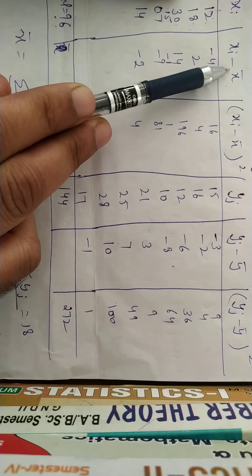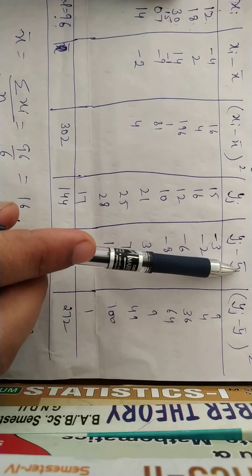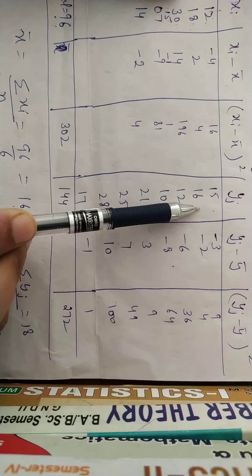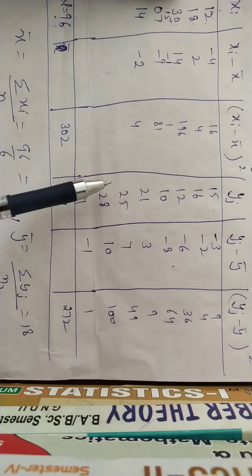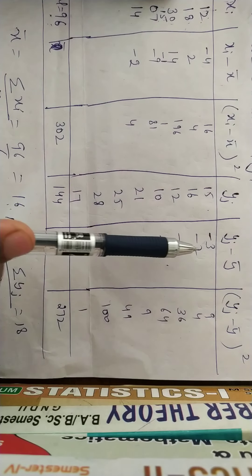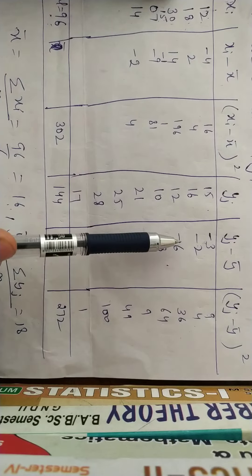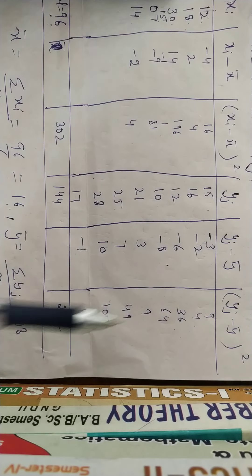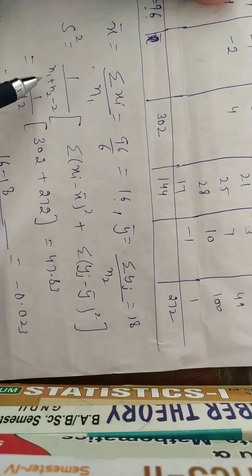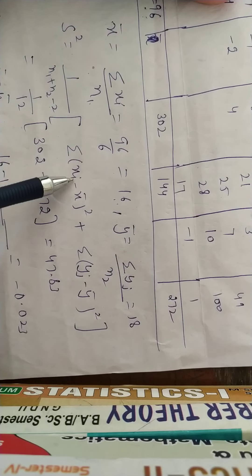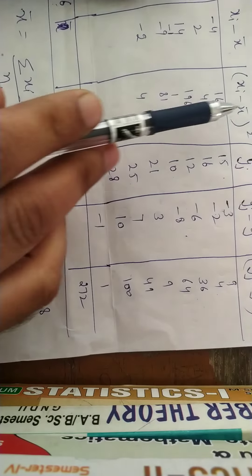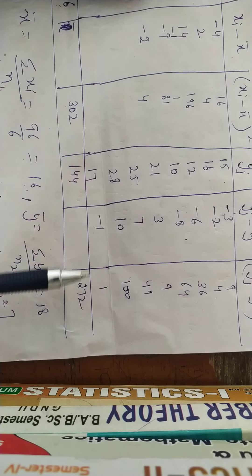Similarly, subtract Y-bar = 18 from each Y entry: 15 − 18 = −3; 16 − 18 = −2; 12 − 18 = −6 (and so on). Square each: (−3)² = 9; (−2)² = 4; (−6)² = 36. Sum all squared deviations for Y. The S-square formula is: S² = 1/(N1 + N2 − 2) × [Σ(Xi − X̄)² + Σ(Yj − Ȳ)²]. The sum for X is 302 and for Y is 272.